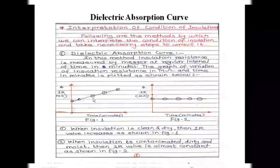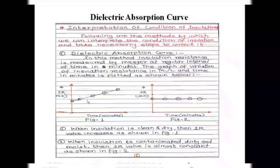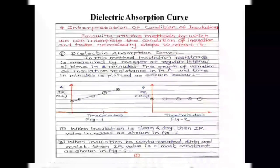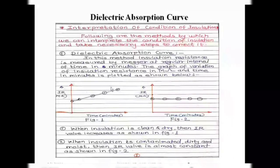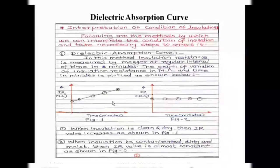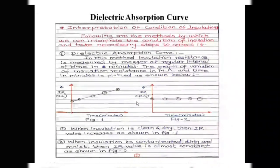The first curve shows that the insulation resistance measured by the megger goes on increasing over the time period. This is figure number one. If we get this graph from the test, then the condition of insulation is concluded to be clean and dry — the insulation does not contain any moisture or any kind of impurities, so it is in good condition.